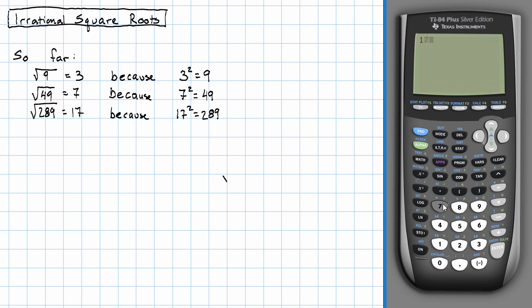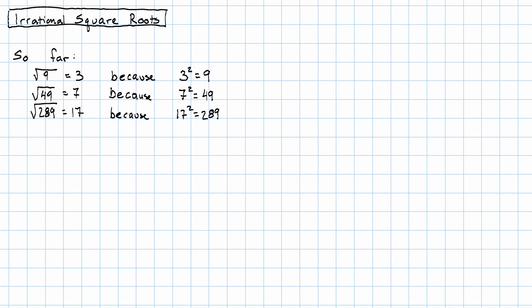Let's make sure that really works. 17 squared means 17 times 17. That really is 289. But what if we have something that is not one of these so-called perfect squares? The perfect squares are just the numbers that we get by squaring integers.